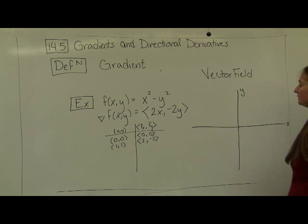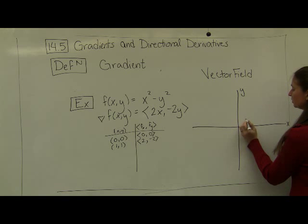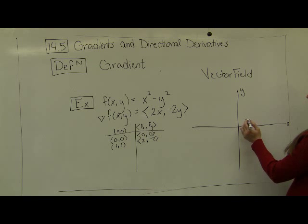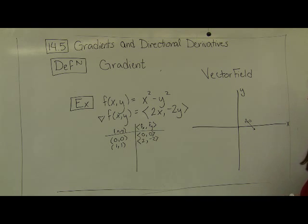I'm going to plot it by having the base of my vector start at the point 1, 1. This was my input value into the function. And then the output value is going to be a vector emanating from 1, 1 that goes 2 in the x direction and negative 2 in the y direction. So it's a vector that looks like this.